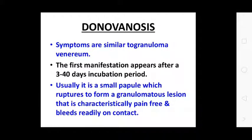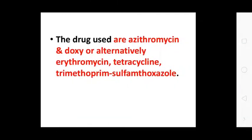Donovanosis: The first lesion appears after a 3–40 day incubation period. Usually it is a small papule which ruptures to form granulomatous lesions that are typically painless and bleed readily on contact. The drugs of choice are azithromycin, doxycycline, and alternatively erythromycin, tetracycline, trimethoprim-sulfamethoxazole.